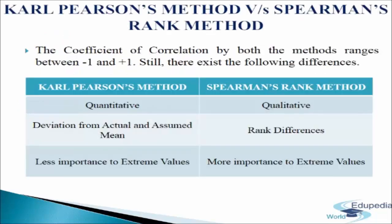Karl Pearson's method versus Spearman's rank method: the coefficient of correlation by both methods ranges between minus 1 and plus 1, but differences exist. Karl Pearson's method measures correlation for quantitative data, whereas Spearman's rank method measures it for qualitative data. Karl Pearson's method calculates deviation from actual or assumed mean, whereas Spearman's method calculates rank differences. Rank correlation gives less importance to extreme values because it assigns them ranks, while Karl Pearson's method gives more importance to extreme values as it is based on actual values.